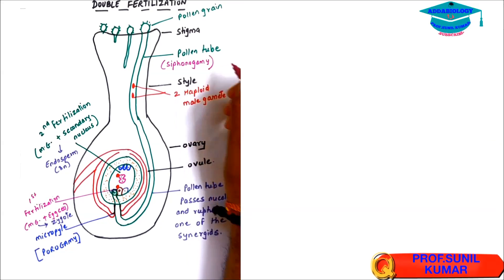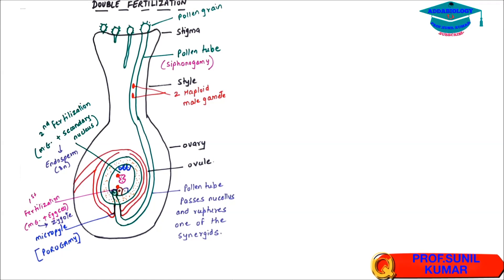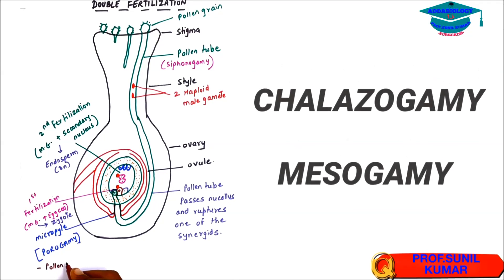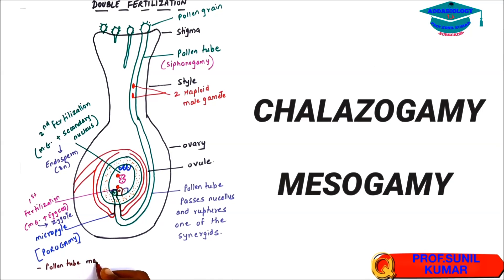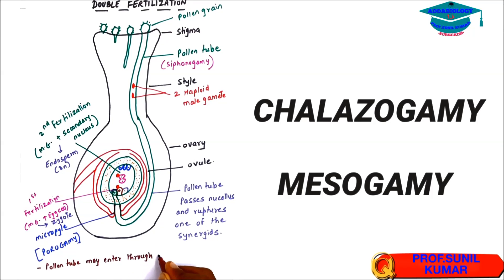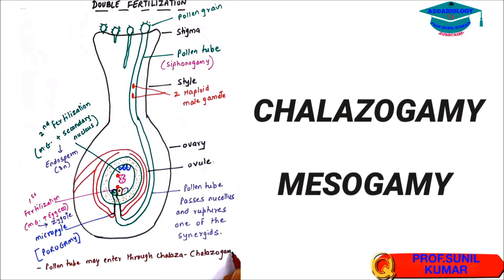Sometimes the pollen tube might enter through the chalaza — then the process is called chalazogamy. Sometimes the pollen tube might enter through the integuments — that is called mesogamy. So to summarize: entry through chalaza is chalazogamy, and entry through integuments is mesogamy.